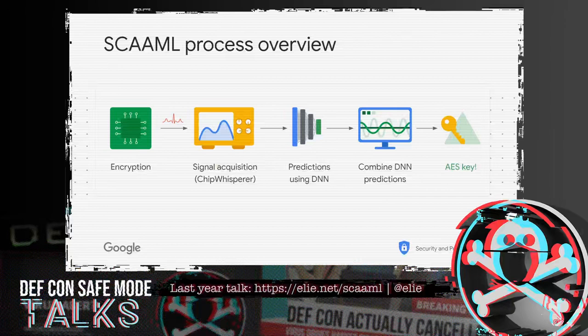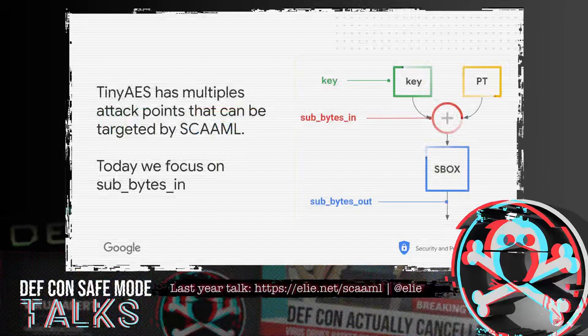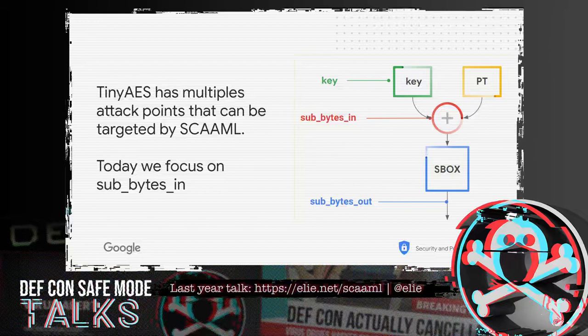When you do a side-channel attack, you do not necessarily directly target the key. You target what we call an attack point. In the case of TinyAES, there are two points which work really well: sub-byte in — when you XOR the key with a plain text — and sub-byte out — the output of the S-box. In this talk, we focus on sub-byte in. The machine learning will predict the sub-byte in value; then to do the real attack, you XOR with the plain text and get the key.